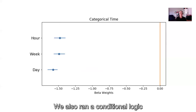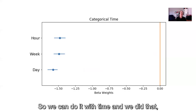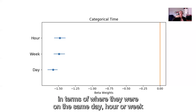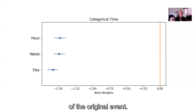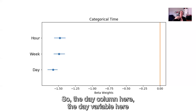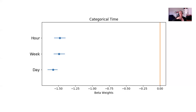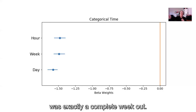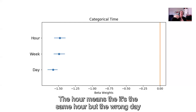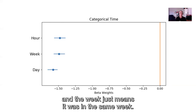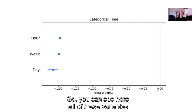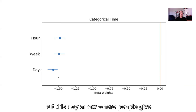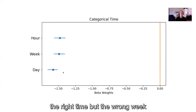We also ran a conditional logit using categorical time, scoring predictors by whether they are on the same day, hour, and week as the original event. The 'day' variable indicates the mistaken event was exactly a week out — same day, wrong week. 'Hour' means same hour but wrong day, and 'week' means it was in the same week. All of these variables were highly significant. The day error — right day, wrong week — was the strongest.